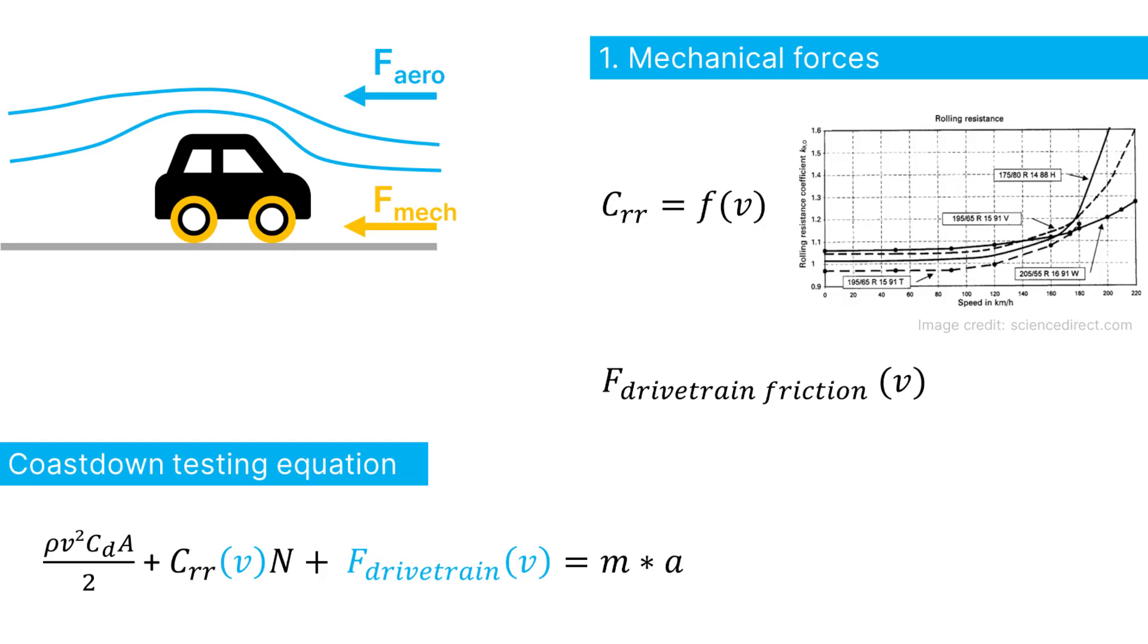Sounds easy, right? Well, it's not that easy. First of all, the mechanical forces. In reality, the rolling resistance coefficient, CRR, isn't independent of velocity and does vary in function of speed and in function of the road conditions, the road surface conditions on the test track.